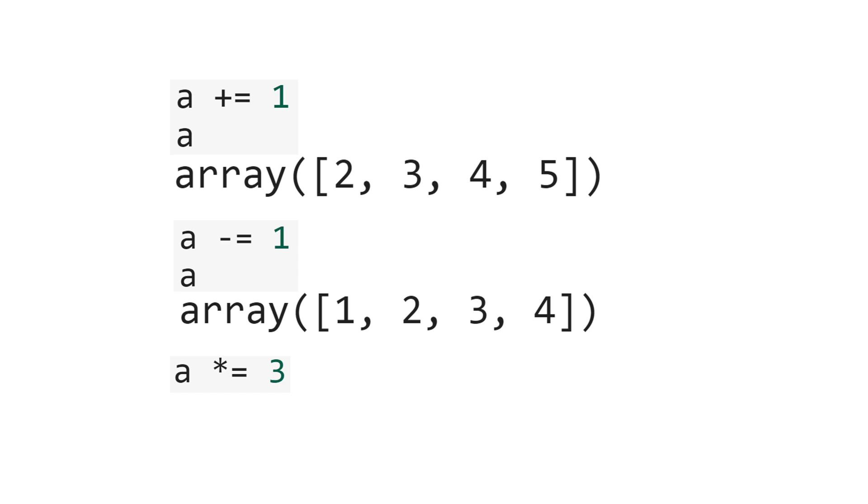This syntax also works for other binary operators, like multiplication. Let's multiply elementwise the vector a by scalar 3. See the result: 3, 6, 9, 12.